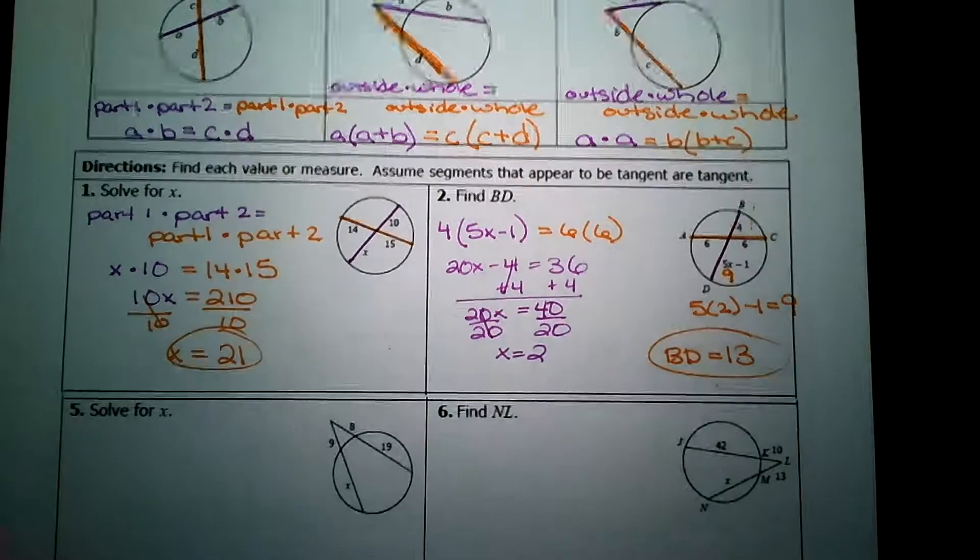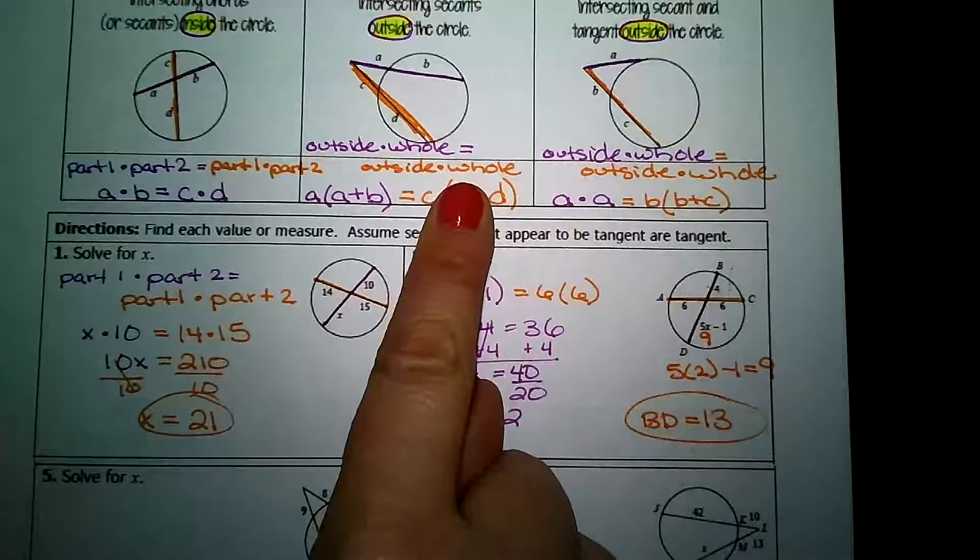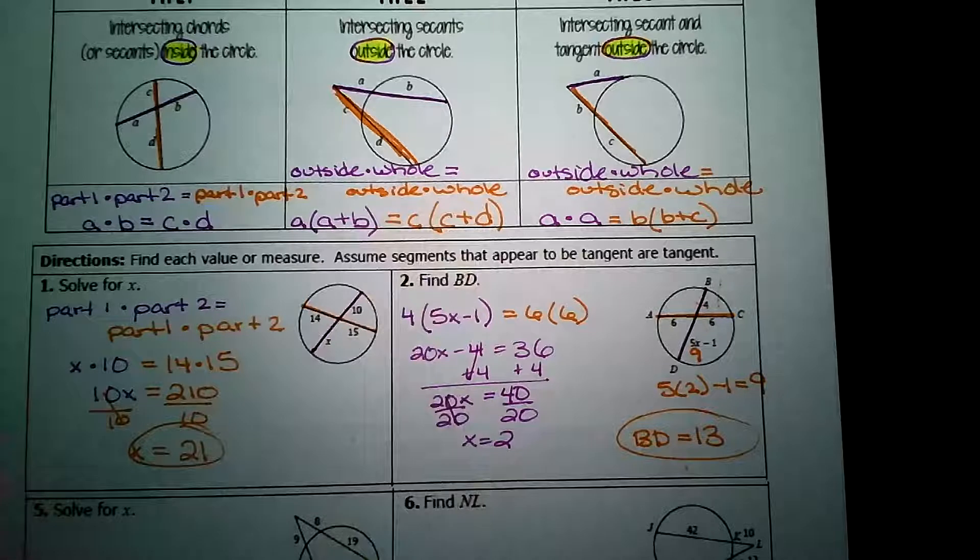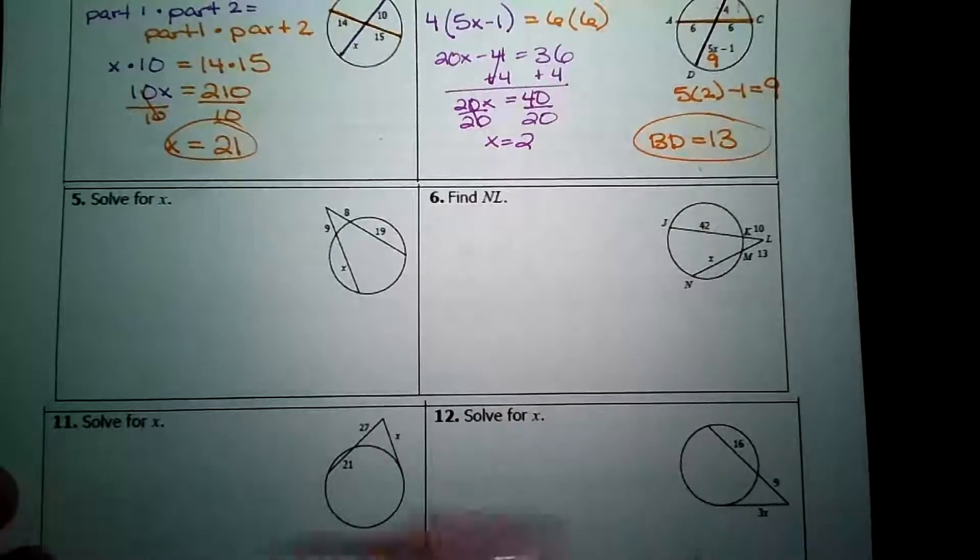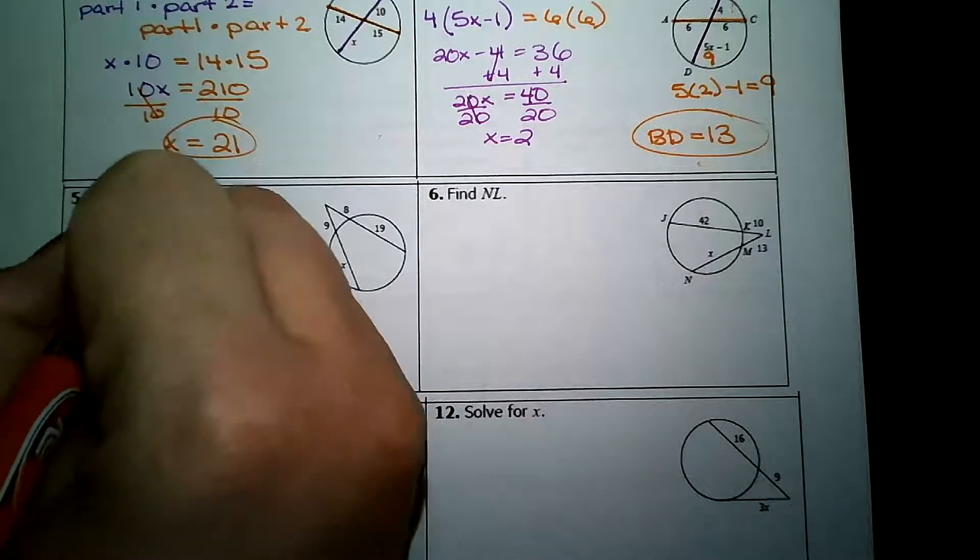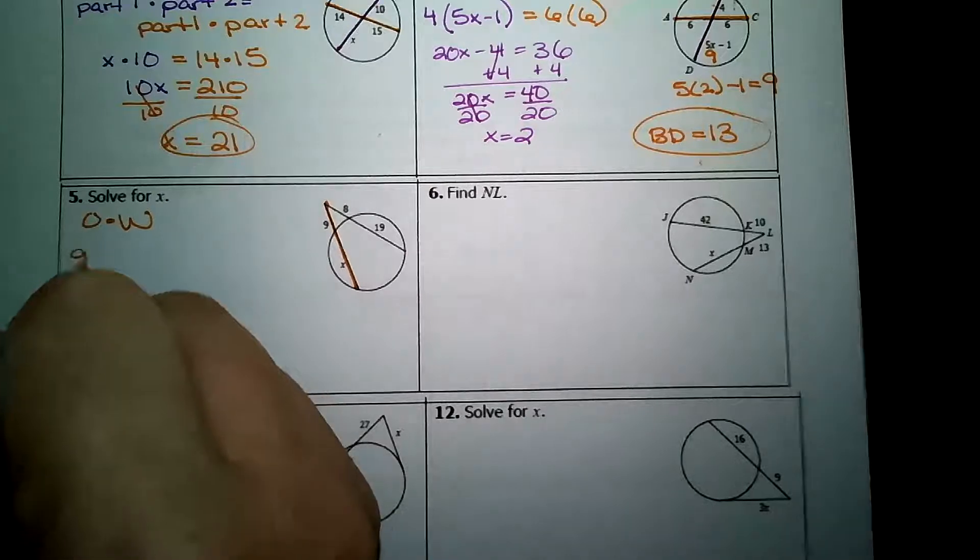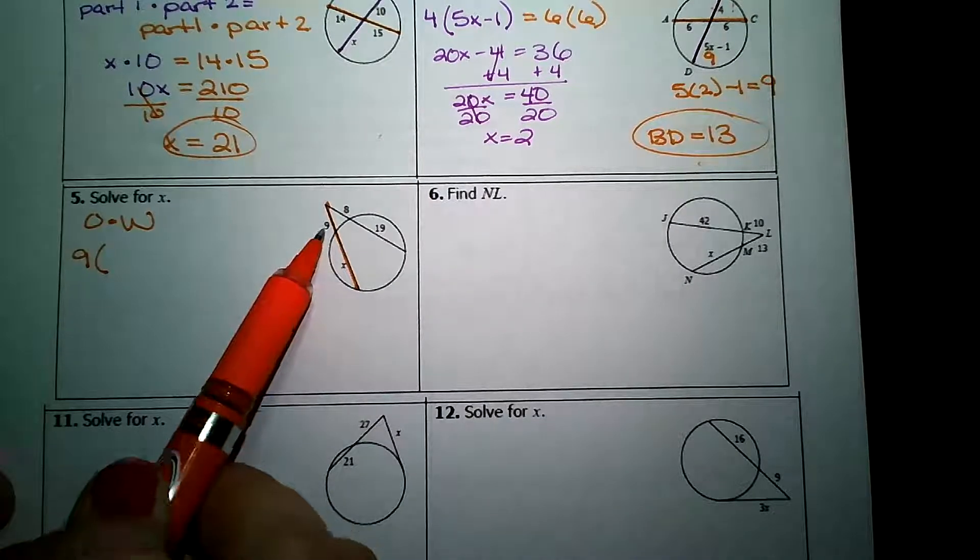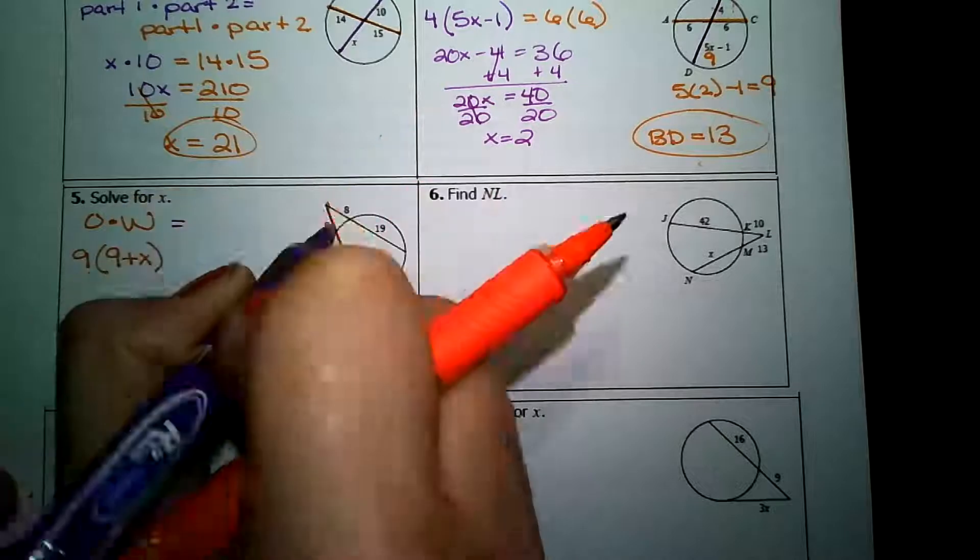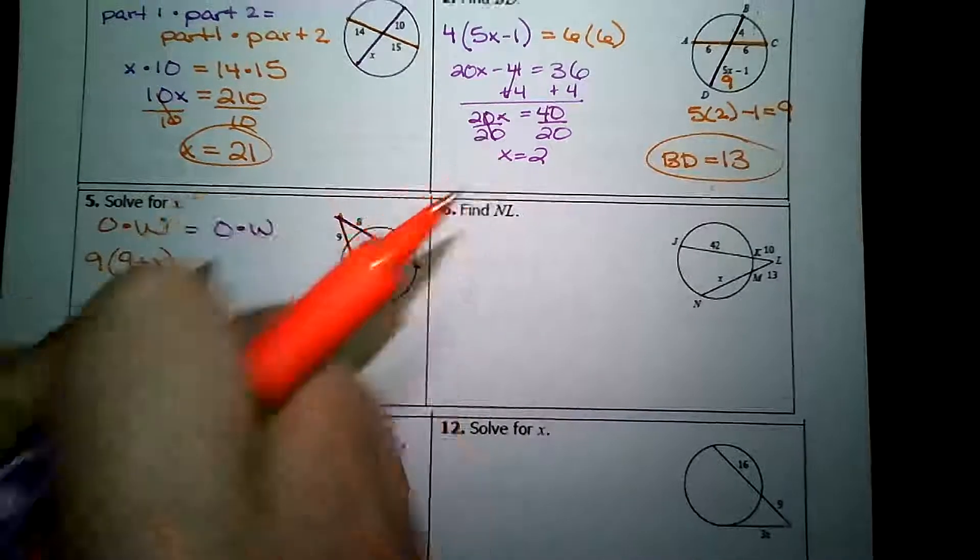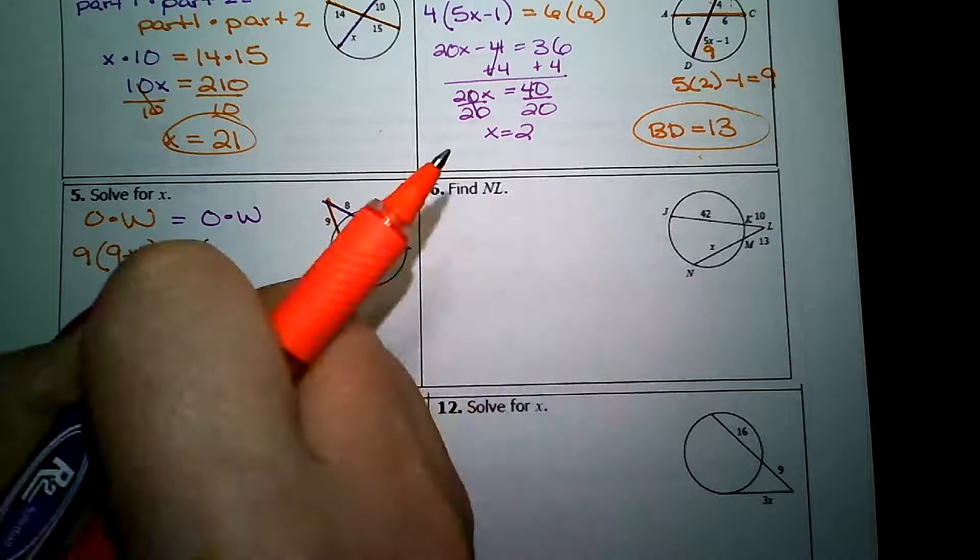The next two problems, check out 5 and 6 here. They're both two secants that intersect on the outside of the circle. So we're going to use this pattern of outside times whole is equal to outside times whole. So let's take a look. I'm going to abbreviate. Outside times whole. I need an orange chord. So I've got the outside number is 9. And the entire piece, the entire secant is 9 plus x. And that's going to be equal to the purple chord's outside times whole value. So outside is 8. Times the whole thing is 8 plus 19.